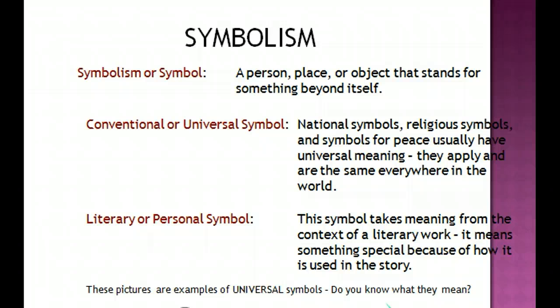Symbolism, or a symbol, is a person, place, or object that stands for something beyond itself. There are different types of symbols. The first type is a conventional or universal symbol — these include national symbols, religious symbols, and symbols for peace, which usually have a universal meaning and are the same everywhere in the world. The second type is a literary or personal symbol, which takes meaning from the context of a literary work and means something special because of how it is used in the story.